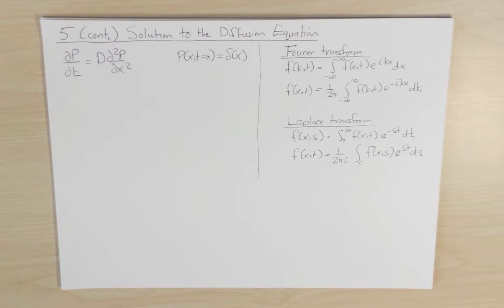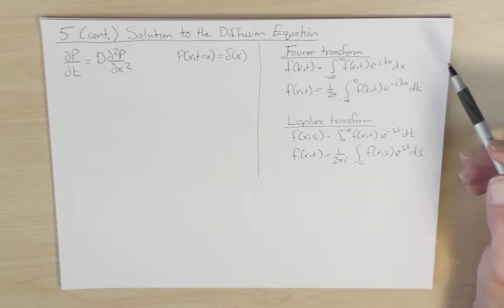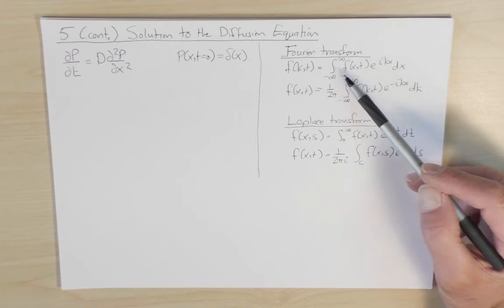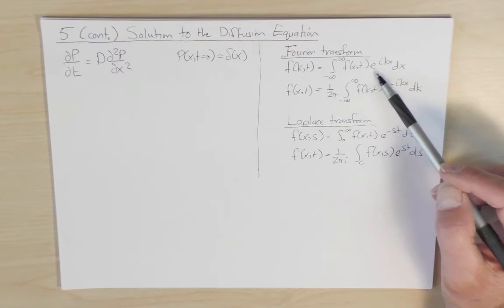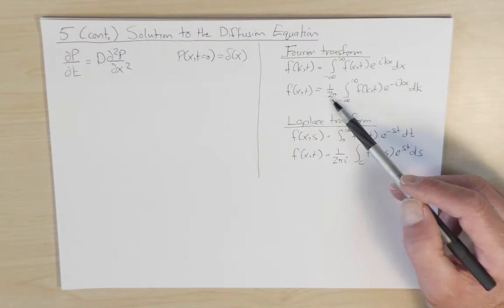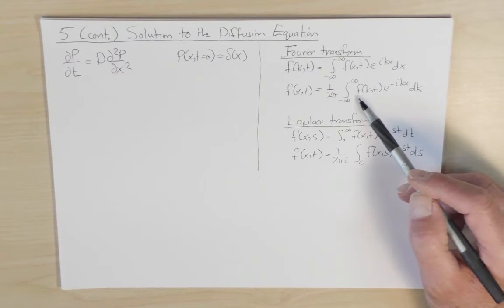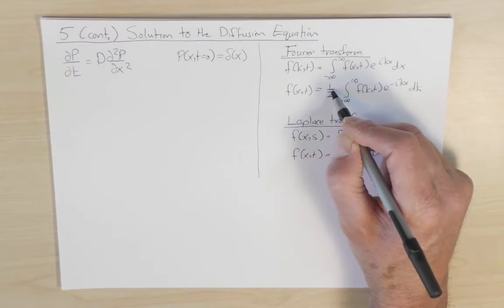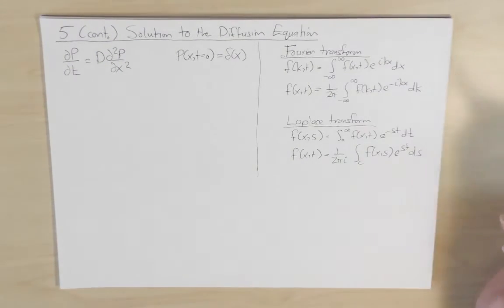To do this solution we're going to make use of Fourier transforms and Laplace transforms. I'm assuming you have had some background at the advanced undergraduate level in Fourier and Laplace transforms. Let me just write down the definitions. The Fourier transform of a function f(x,t) is the integral of f(x,t) e to the ikx dx, and the inverse Fourier transform is f(x,t) equals one over 2π times the integral over k of f(k,t) e to the minus ikx. Notice the convention: the 1 over 2π factor is in the inverse transform and a 1 in the direct Fourier transform.